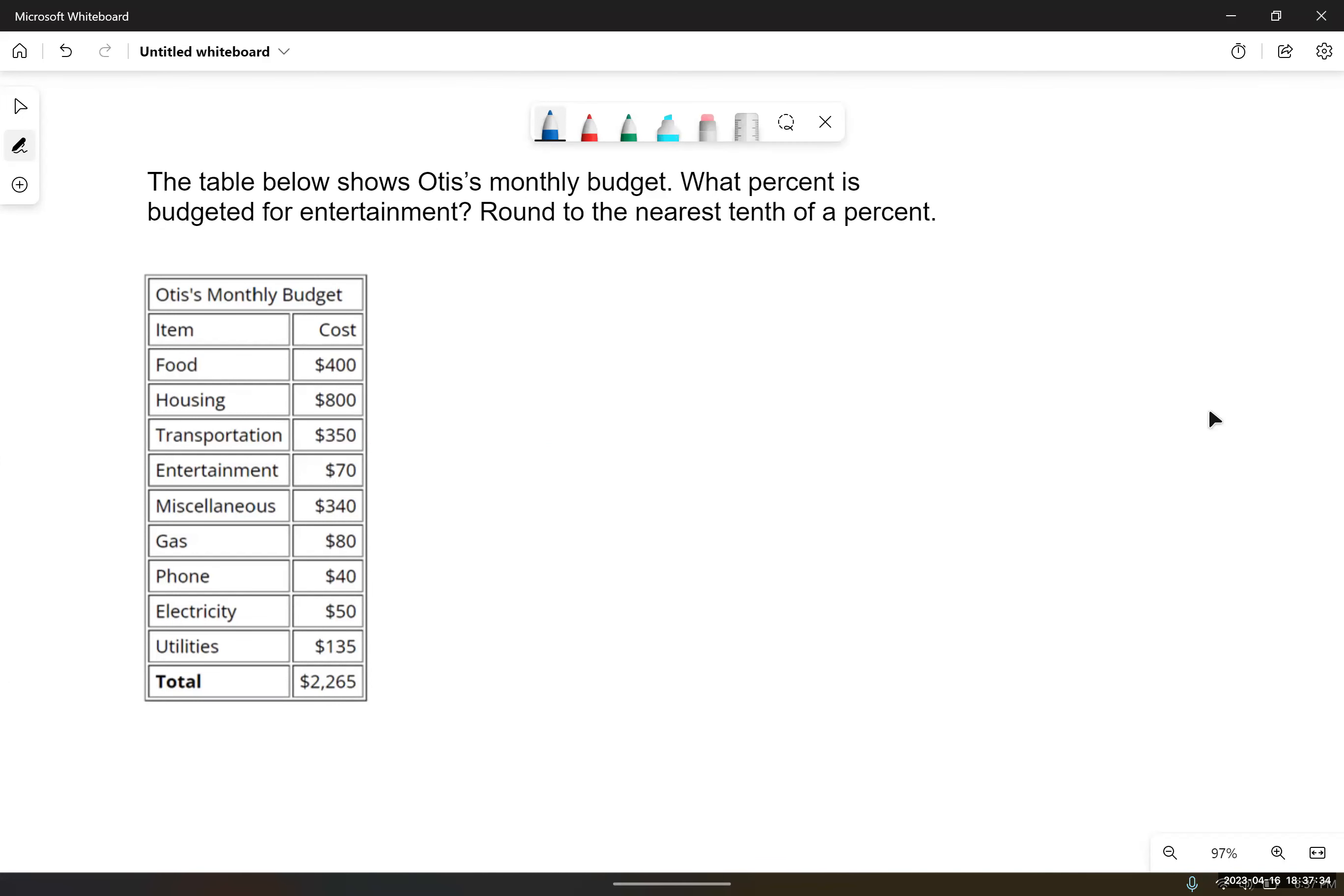The table below shows Otis's monthly budget. What percent is budgeted for entertainment? And we're going to round the answer to the nearest tenth of a percent.